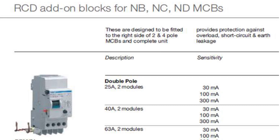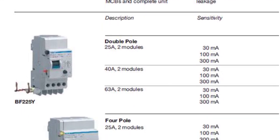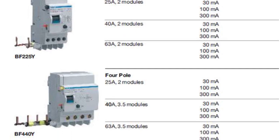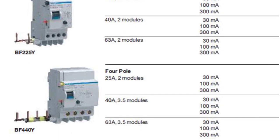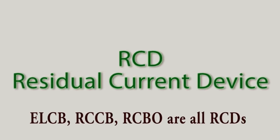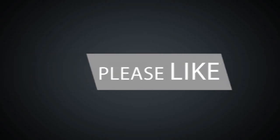RCBO may be an integral unit or may be made by assembly of MCB and RCCB. RCD — Residual Current Device — is a family of products which offers protection against earth leakage faults. So technically, RCCB, RCBO, and ELCB are all RCDs.